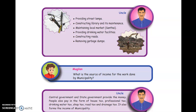Uncle, what is the source of income for the work done by municipality? The central government and state government provide the money. People also pay in the form of house tax, professional tax, drinking water tax, shop tax, road tax, and drainage tax. These also form the income of the municipality.